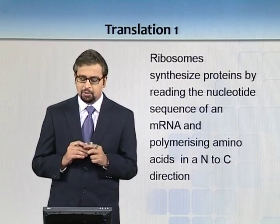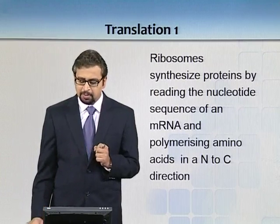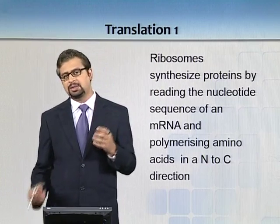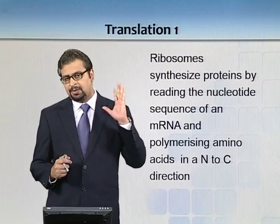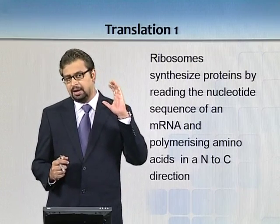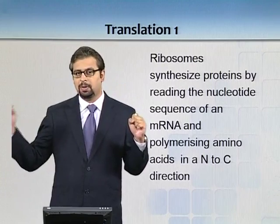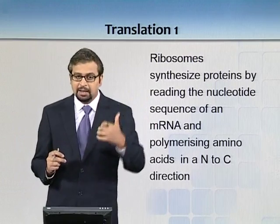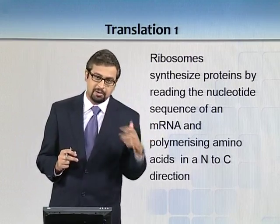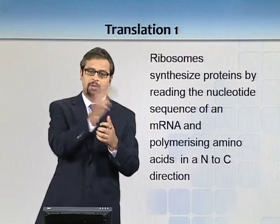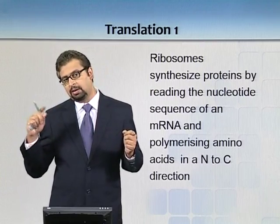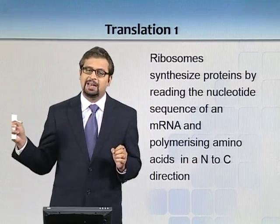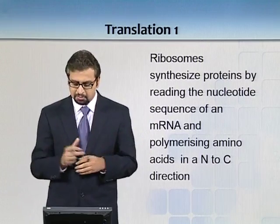Ribosomes synthesize proteins by reading the nucleotide sequence of an mRNA and polymerizing amino acids in an N-to-C direction. On an amino acid we have one amino group and one carboxylic group. When peptide bonds are formed, the starting amino acid always has its amino terminal free because there is no peptide bond on that side, and the chain ends in a free carboxylic group — that's what we mean by N-to-C direction.